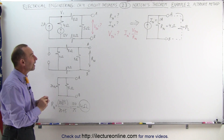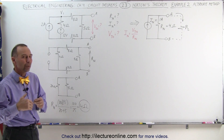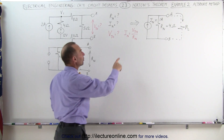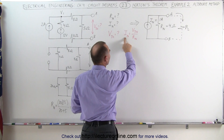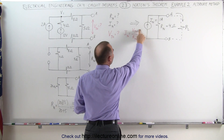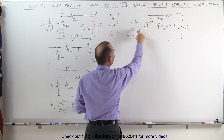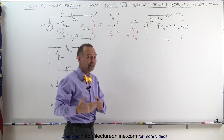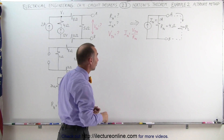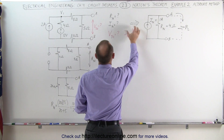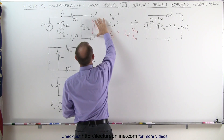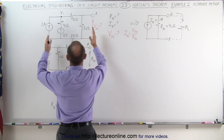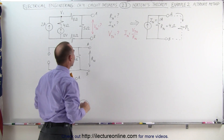Now we're going to find the Norton current, but instead of doing it the way we did last time, we're going to say that the Norton current is equal to the Thevenin voltage divided by the Norton resistance, which by the way is equal to the Thevenin resistance. So we need to find the Thevenin voltage, which is the voltage across terminals A and B with the original circuit.